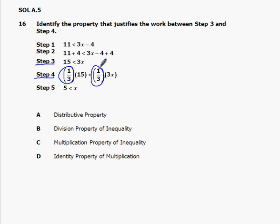The property that allows you to multiply both sides of an inequality by the same number is the multiplication property of inequality, which is choice C.